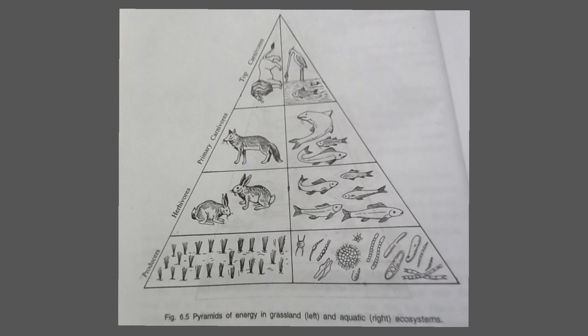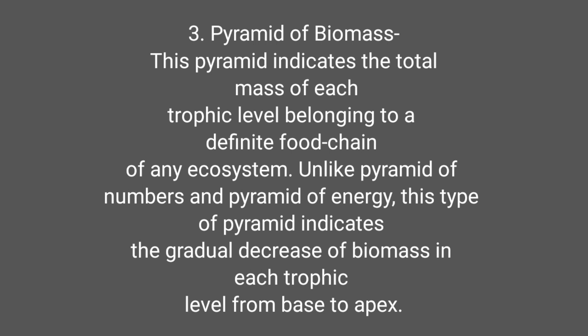The pyramid of numbers is also of upright type, where producers, primary consumers, secondary consumers, tertiary consumers, etc., are arranged from base to apex in decreasing sequence. You can see in the figure pyramids of energy in grassland and aquatic ecosystems. The third type is the pyramid of biomass.